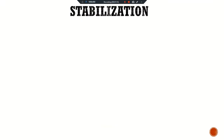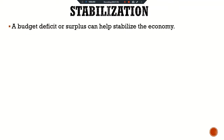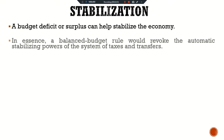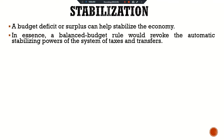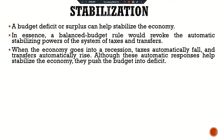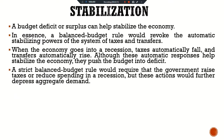The first reason is stabilization. A budget deficit or surplus can help stabilize the economy. A balanced budget rule would revoke the automatic stabilizing parts of the system of taxes and transfers. When the economy goes into a recession, taxes automatically fall and transfers automatically rise. Although these automatic responses help stabilize the economy, they push the budget into deficit. A strict balanced budget rule would require that the government raise taxes or reduce spending in a recession, but these actions would further depress aggregate demand.